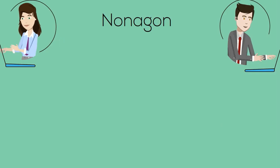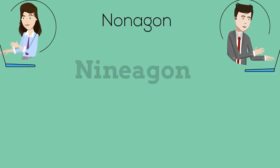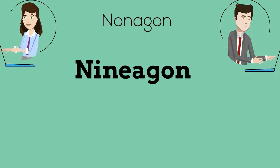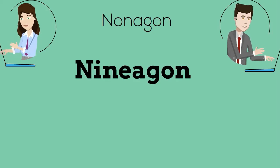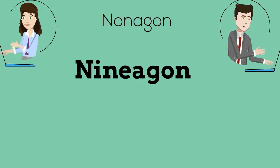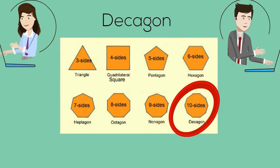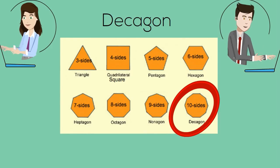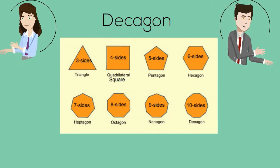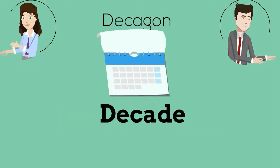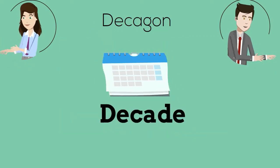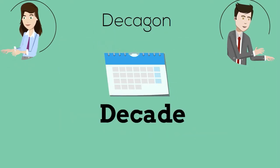A nonagon has nine sides. Nonagon sounds like nine again, so that helps me remember nine. And finally, a decagon has ten sides, so I remember a decade is ten years in length.